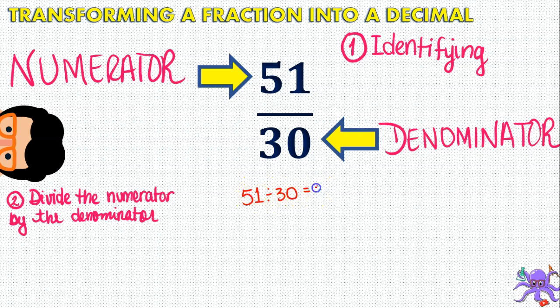So, 51 divided by 30, that's 1, 1 times 30 is 30, we subtract, we get 21, and then we get 21 divided by 30. Because we have finished with all the numbers here and have already reached a remainder, we can actually continue adding a comma, so that we get 210 divided by 30, which is going to be 7. 7 times 0 is 0, and 7 times 3 is 21. And when we subtract it, we get a 0 remainder, so we know we have finished.